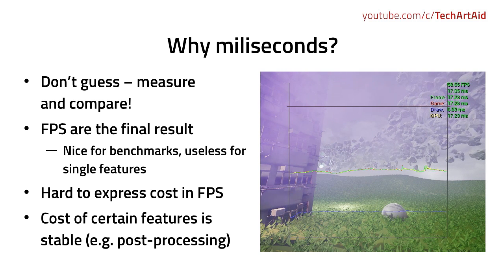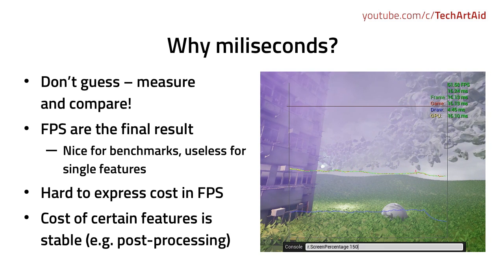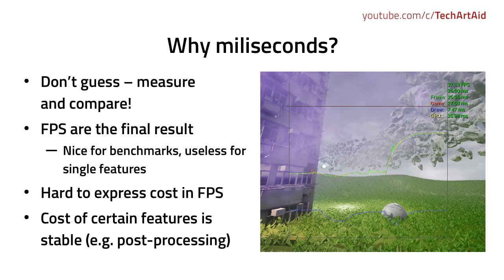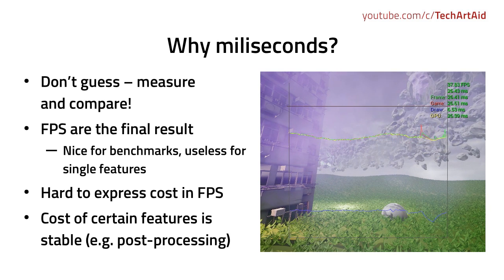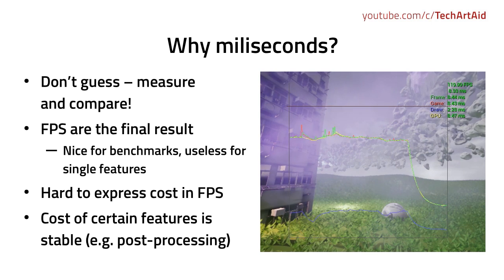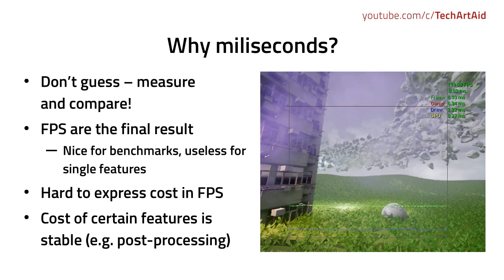The frames per second are very useful for benchmarks — very common, as you know, for testing if a game runs at 30 or 60 FPS on certain hardware. So why is this quite useless for us? Well, it comes down to how hard it is to express the cost of a certain feature in FPS.